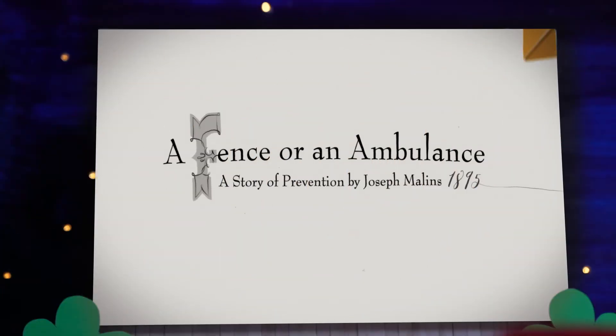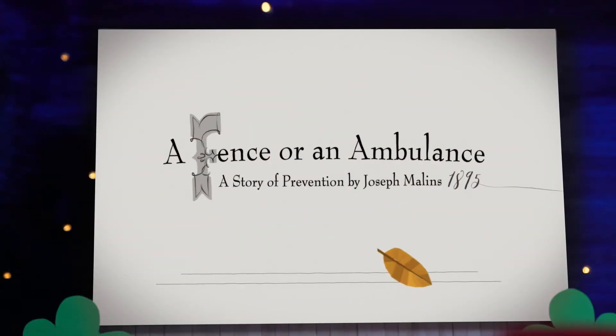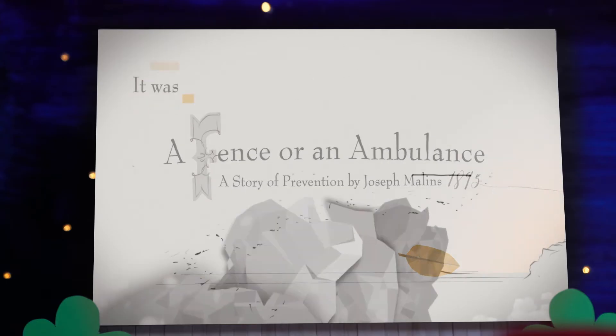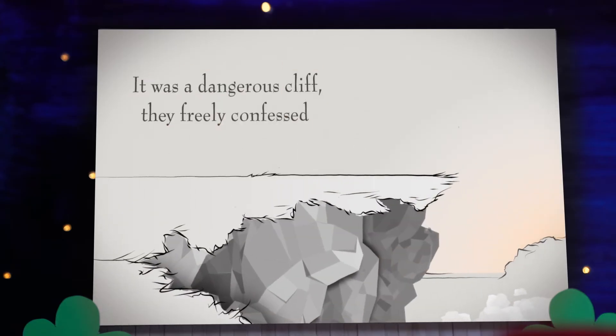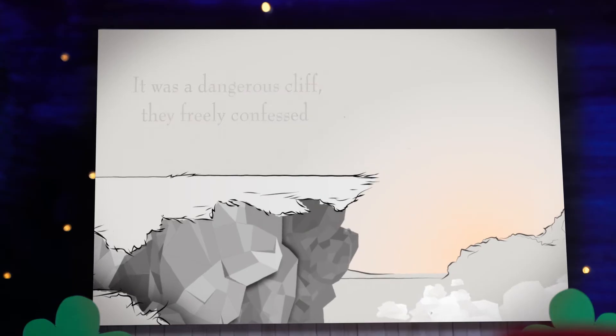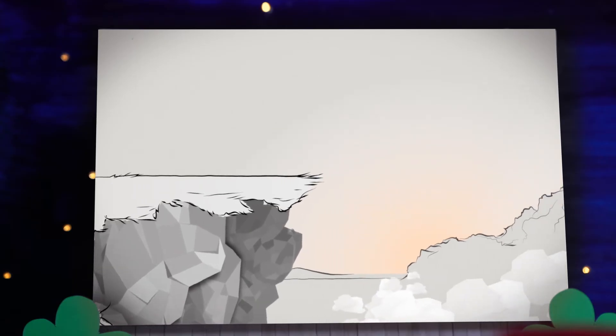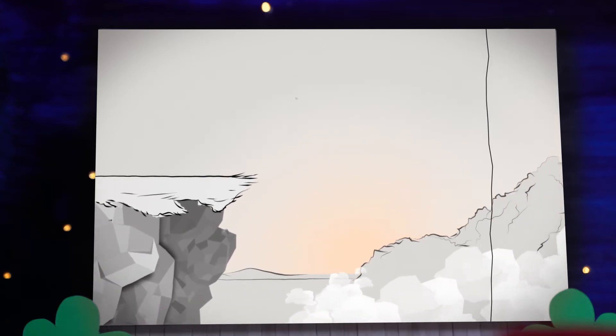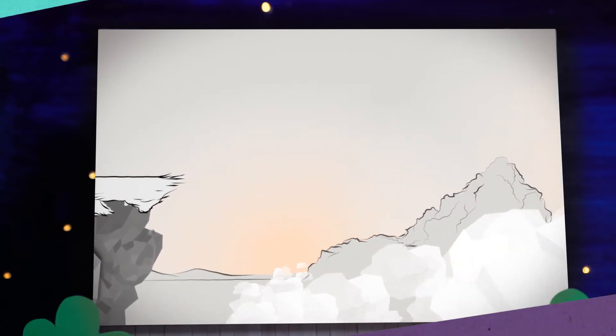We refer again to the problem in the story of the fence and the ambulance. Here is why SAGE identified the problem: people were falling off the cliff, and the current response — providing an ambulance — did not prevent people from falling and being injured.